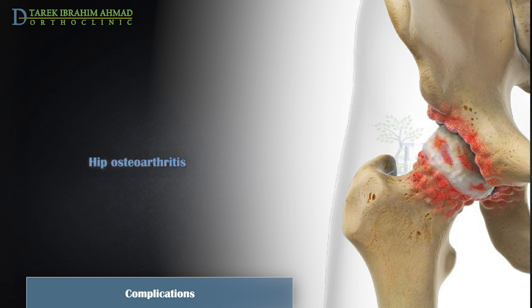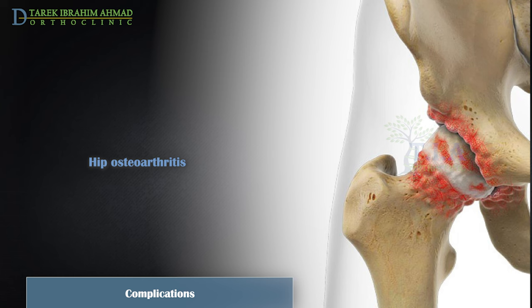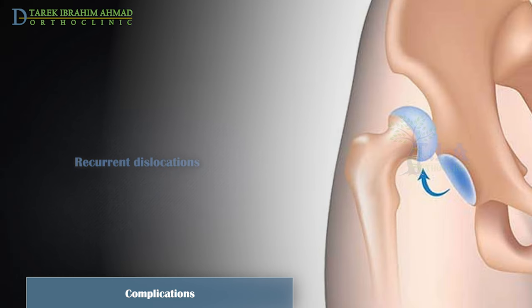Osteoarthritis: The protective cartilage covering the bone may also be damaged, which increases the risk of developing osteoarthritis in the joint. Osteoarthritis can eventually lead to the need for procedures like a total hip replacement. Recurrence: If the injury does not heal completely, the patient may be at risk of further dislocations. Recurrent hip dislocation occurs in less than two percent of cases.